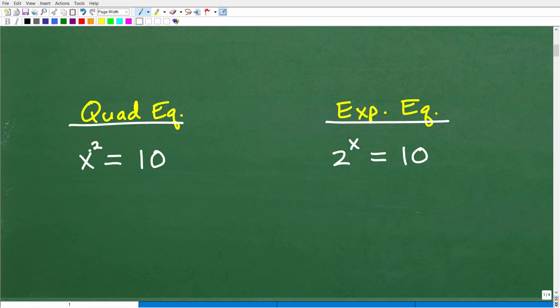This first equation, x squared equals 10, is a what? Hopefully you recognize that as a quadratic equation. This is the kind of stuff you study in Algebra 1. What can you tell me about quadratic equations? Put some of your answers into the comment section. How do we solve quadratic equations? The second thing is how many solutions does a quadratic equation have?